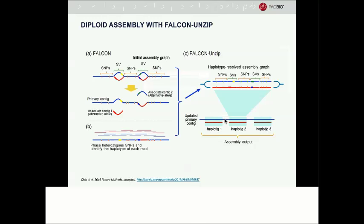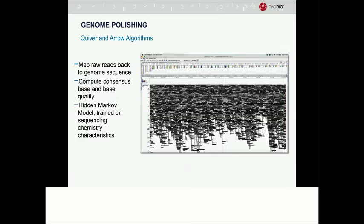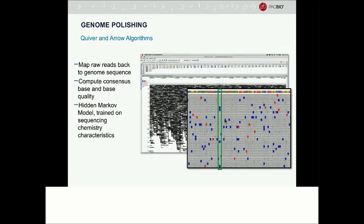Following genome assembly, we do a round of genome polishing to increase base quality. All raw reads are mapped back to the reference sequence, and consensus-based calls and qualities are calculated using the Quiver or Arrow models, which are specifically developed for the observed error modes of SMRT sequencing. You can see a zoomed-in region of the genome with the consensus sequence at top in color and all aligned raw reads below — one read per row. The base highlighted in green is called as a C in the consensus sequence, although a few raw reads have a deletion at that base.